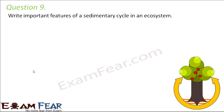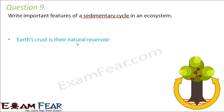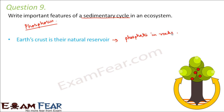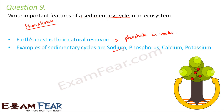Question number nine: Write important features of a sedimentary cycle in an ecosystem. We discussed the phosphorus cycle. For the phosphorus cycle, the earth's crust is the natural reservoir, and that is why it is a sedimentary cycle — it is present in the form of sediments in the earth's crust, specifically as phosphates in rocks. Examples of sedimentary cycles are sodium, phosphorus, calcium, and potassium.